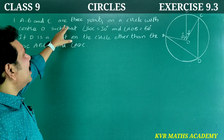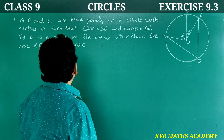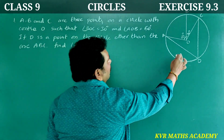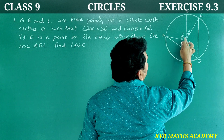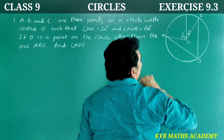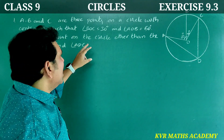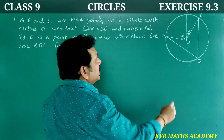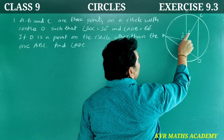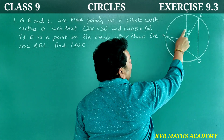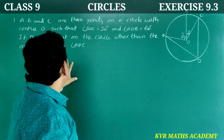A, B, C are the points on the circle with center O. Angle BOC is equal to 30 degrees as given, and angle AOB is equal to 60 degrees as given.